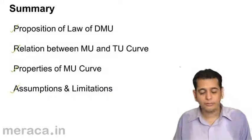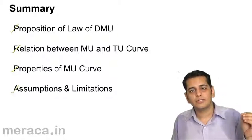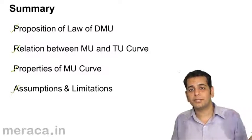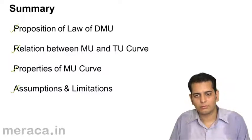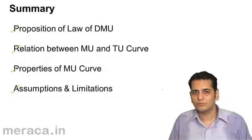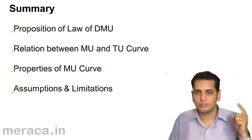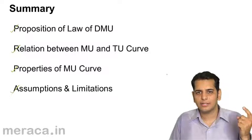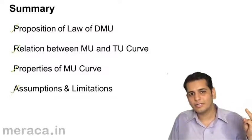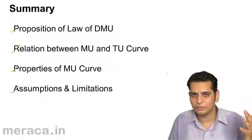And finally, we've done assumptions and limitations. The assumptions being: the cardinal measurement of utility, the marginal utility of money remaining constant, and the third hypothesis of the independent analysis of utility. The limitations being: first, homogeneous goods; second, standard units of consumption; third, continuous consumption; fourth, prestigious goods; and fifth, related goods.